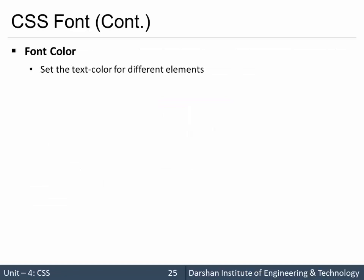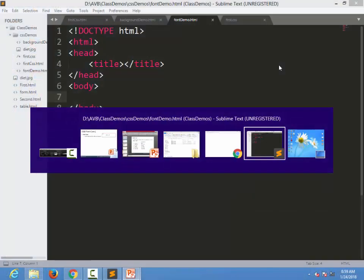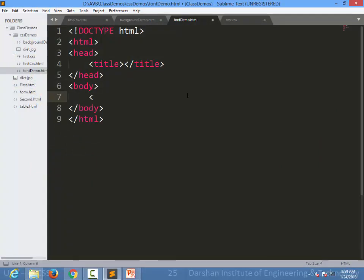First is CSS color — how we can specify color to the elements. The property name is 'color' and the values for that are predefined colors, or the hex #rrggbb format, and one more option is the RGB function. Let's see an example of how we can specify color to the elements.